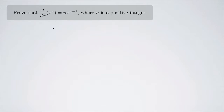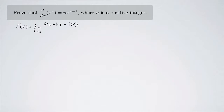Let's start with the limit definition of the derivative, because that's where you generally have to start when you're proving derivative rules. So we know that f prime of x is going to equal the limit as h approaches 0 of f of x plus h minus f of x, all over h.